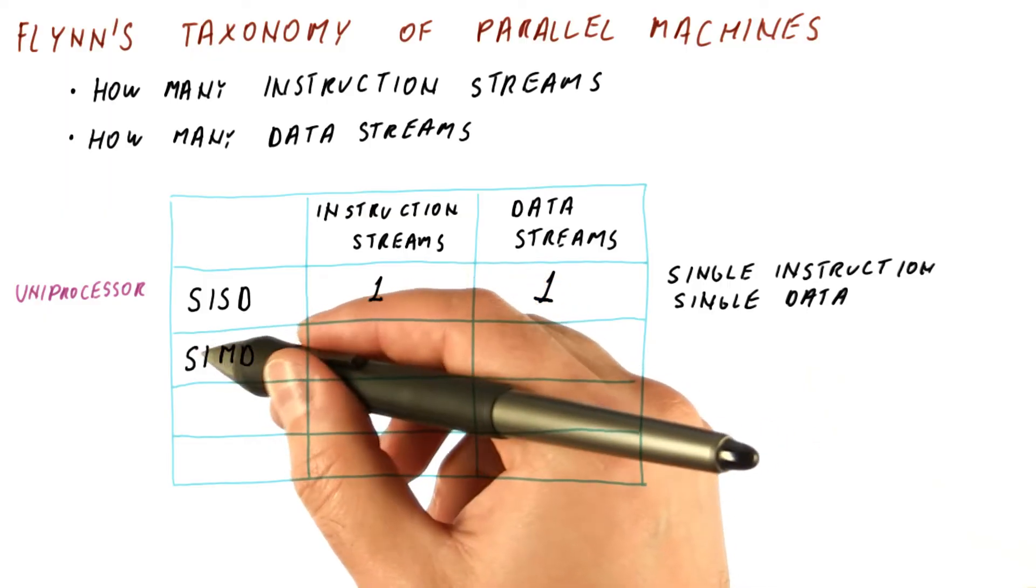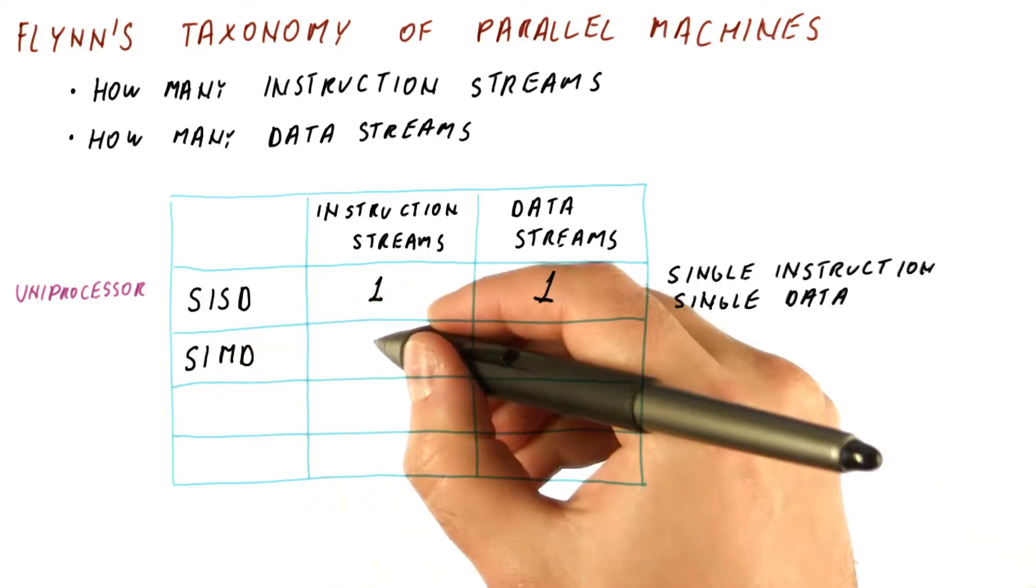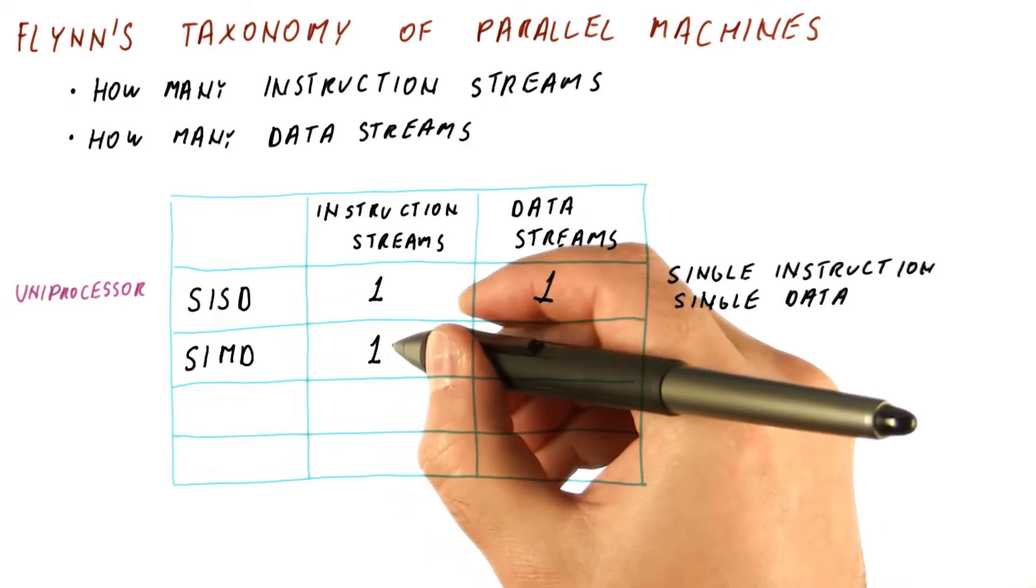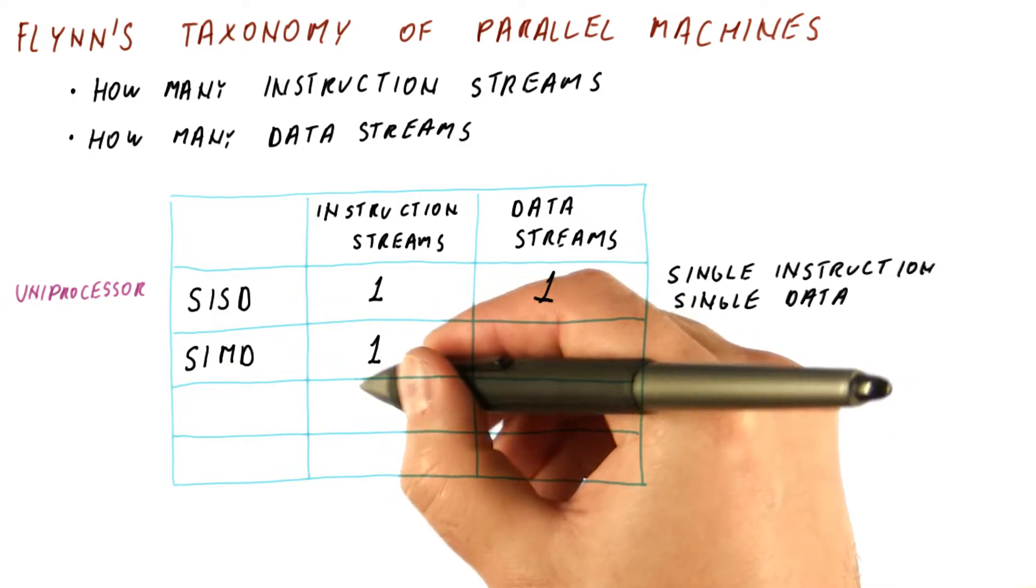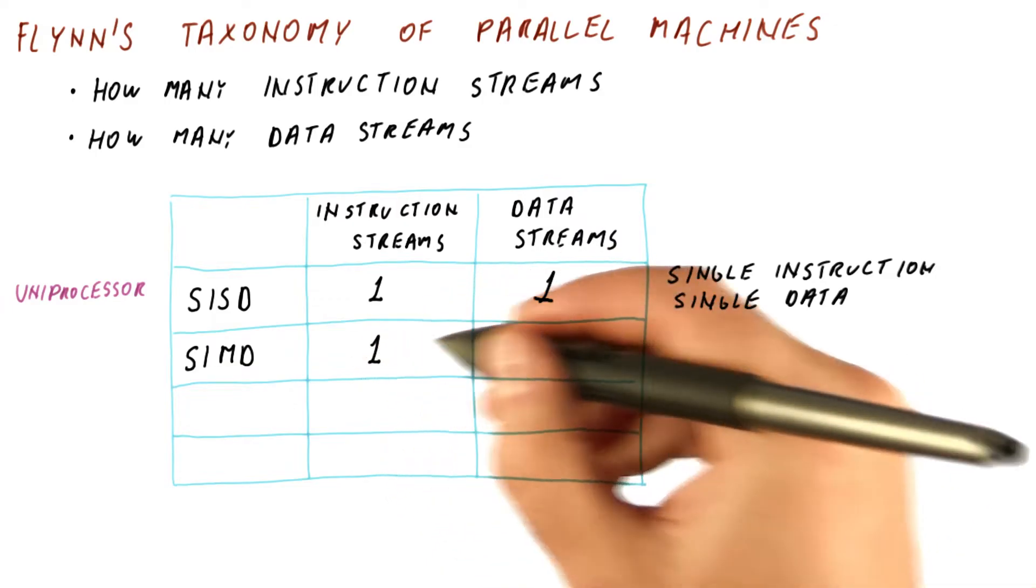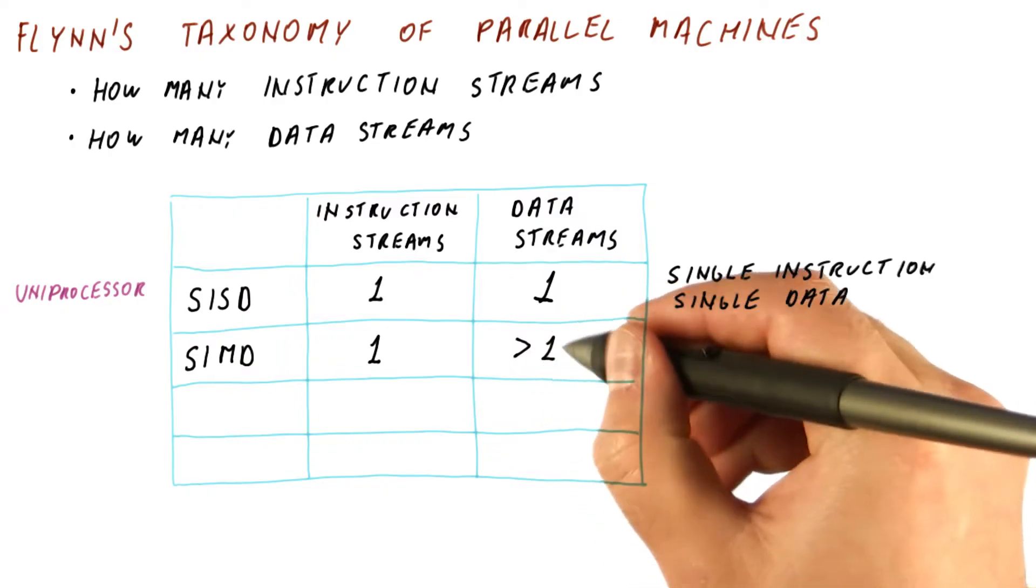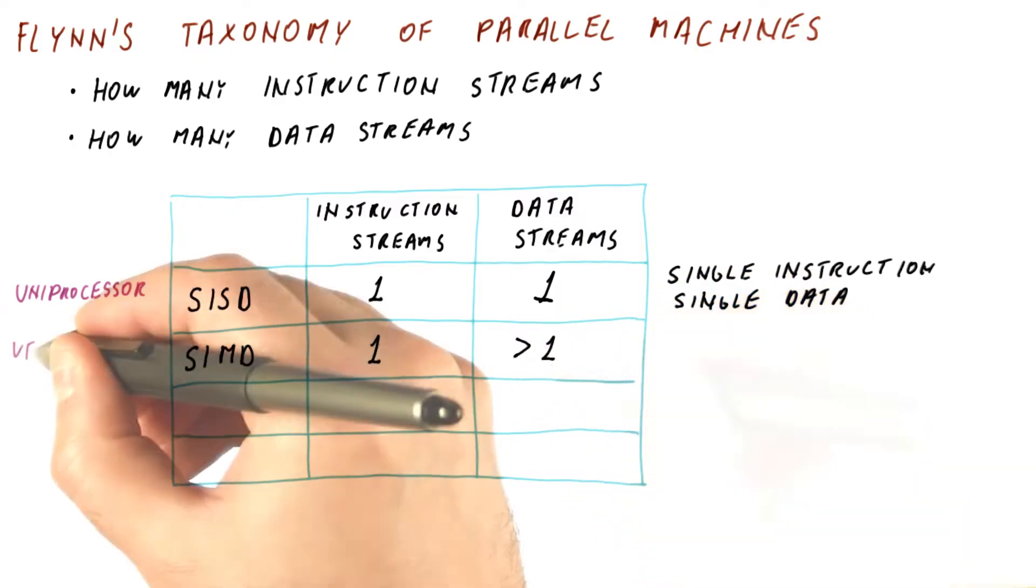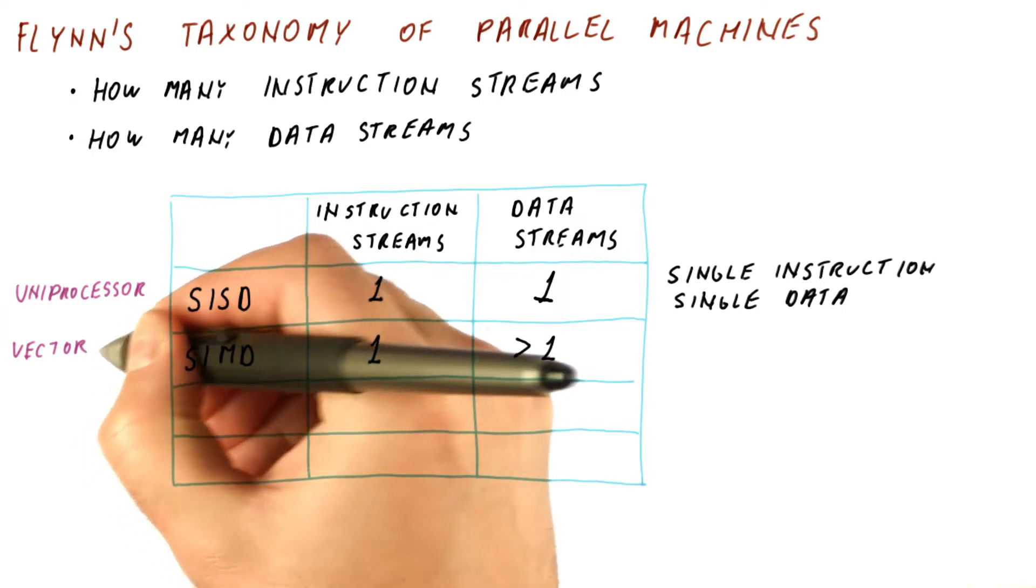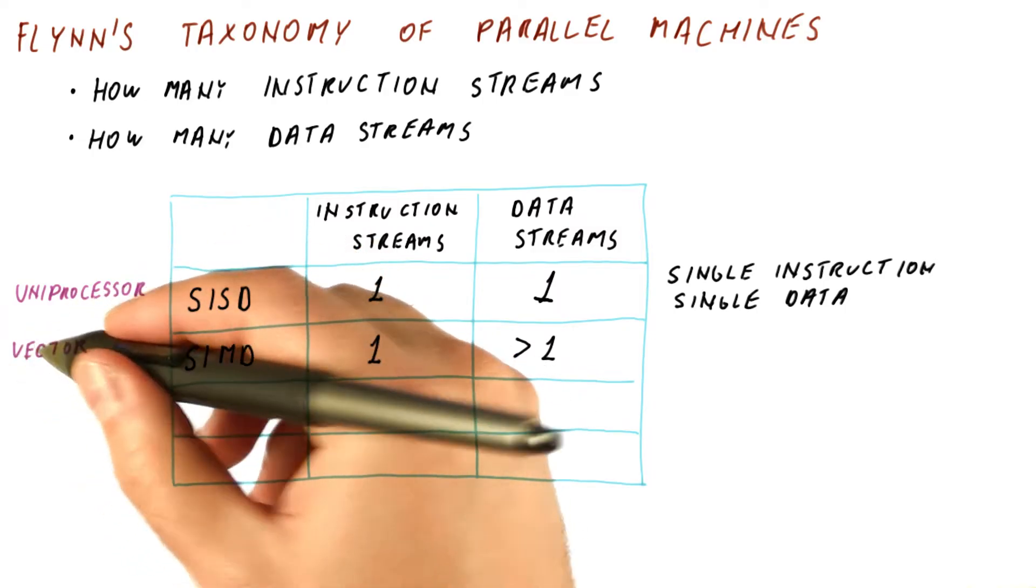The next type of machine is single instruction, multiple data, or SIMD. It executes one instruction stream, meaning there is one program with a single program counter. But there is more than one data stream they operate on. The most common example of this used to be vector processors.